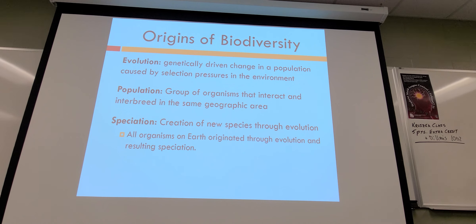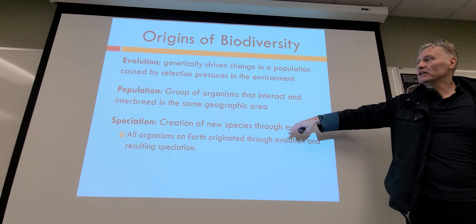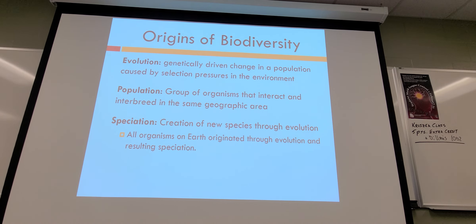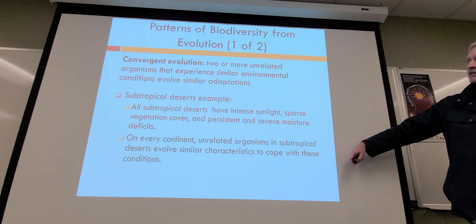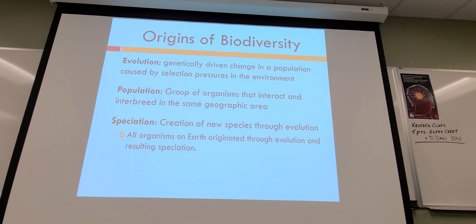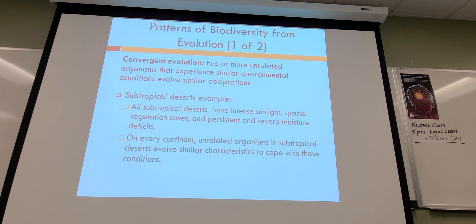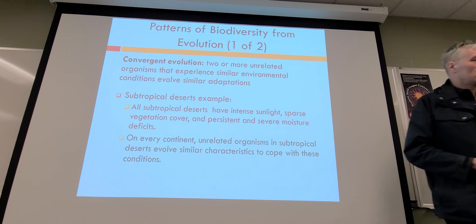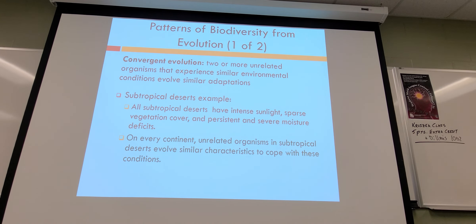Origins of biodiversity: evolution is one of the drivers, because species will differentiate, and if they differentiate enough, they become subspecies and then actual different species. A population is a group of organisms that interact and interbreed in the same geographic area — for example, when you go to Yellowstone they'll talk about the park's population of this and that. Speciation is the process of evolution when animals branch off into new animals. Convergent evolution happens when completely different species in similar environments in different areas of the world adapt in the same way.